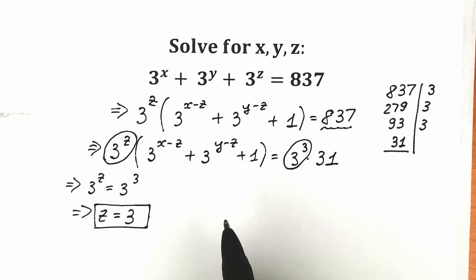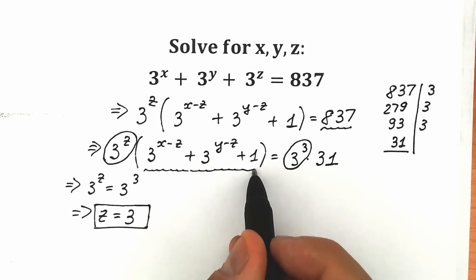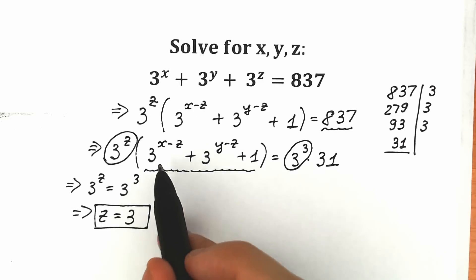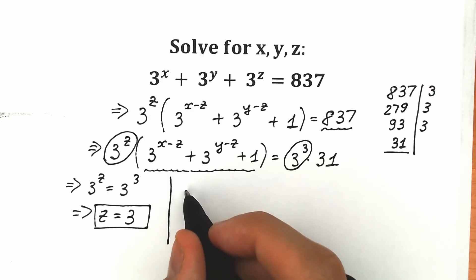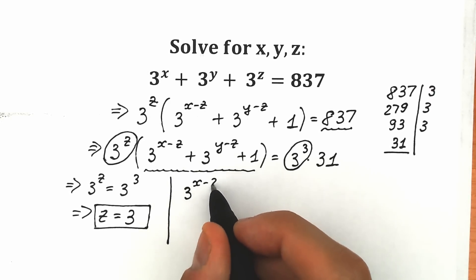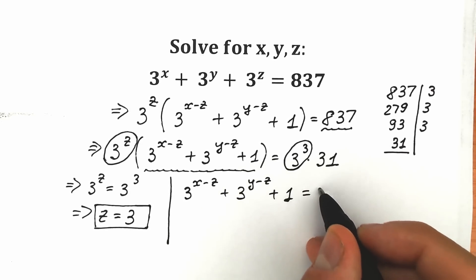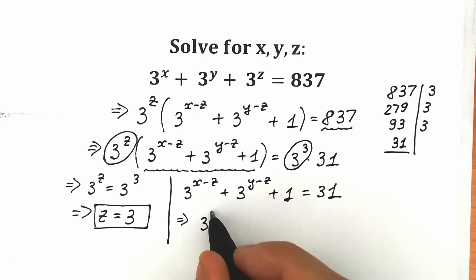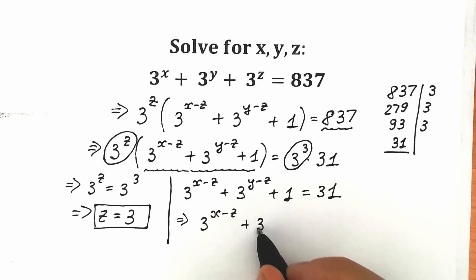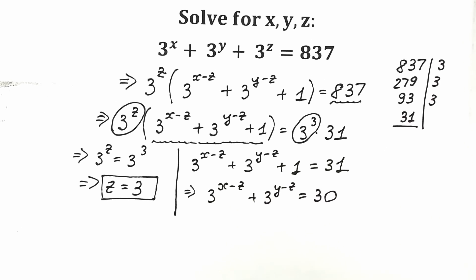We've found z, but we still need to find x and y. We cancel the 3 to the power 3 and 3 to the power z, and the remaining parenthesis must equal 31. So we have: 3 to the power x minus z, plus 3 to the power y minus z, plus 1, equal to 31. Moving the 1 to the right side gives us: 3 to the power x minus z, plus 3 to the power y minus z, equal to 30.